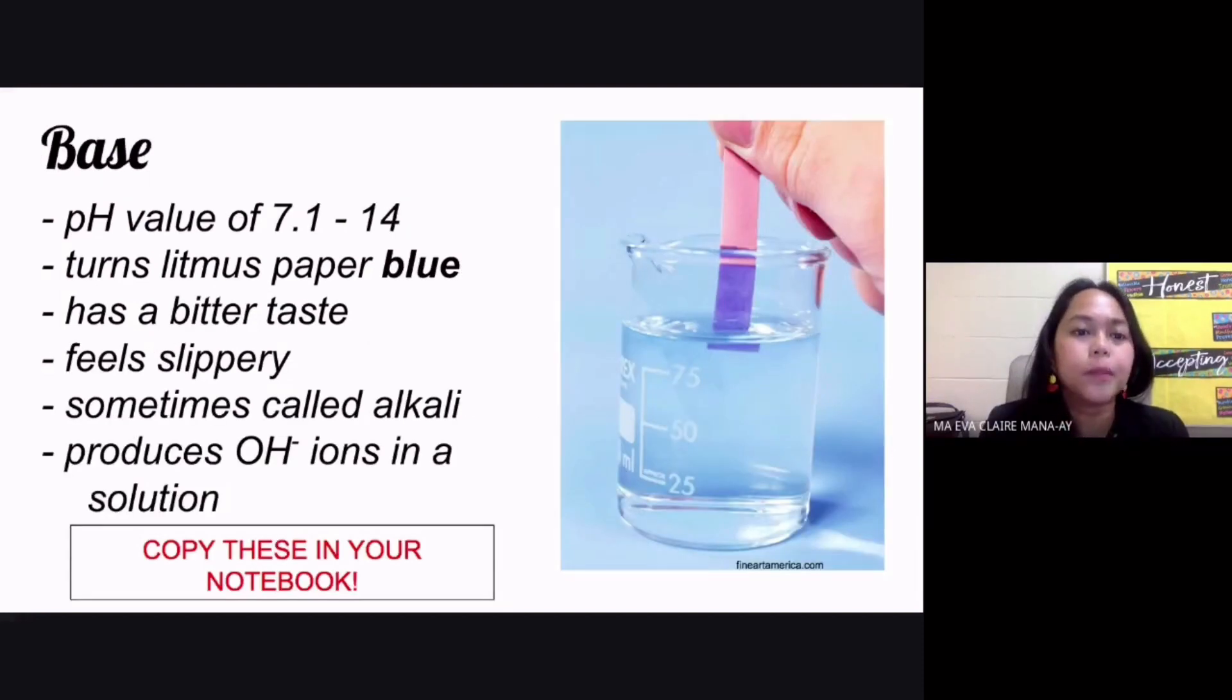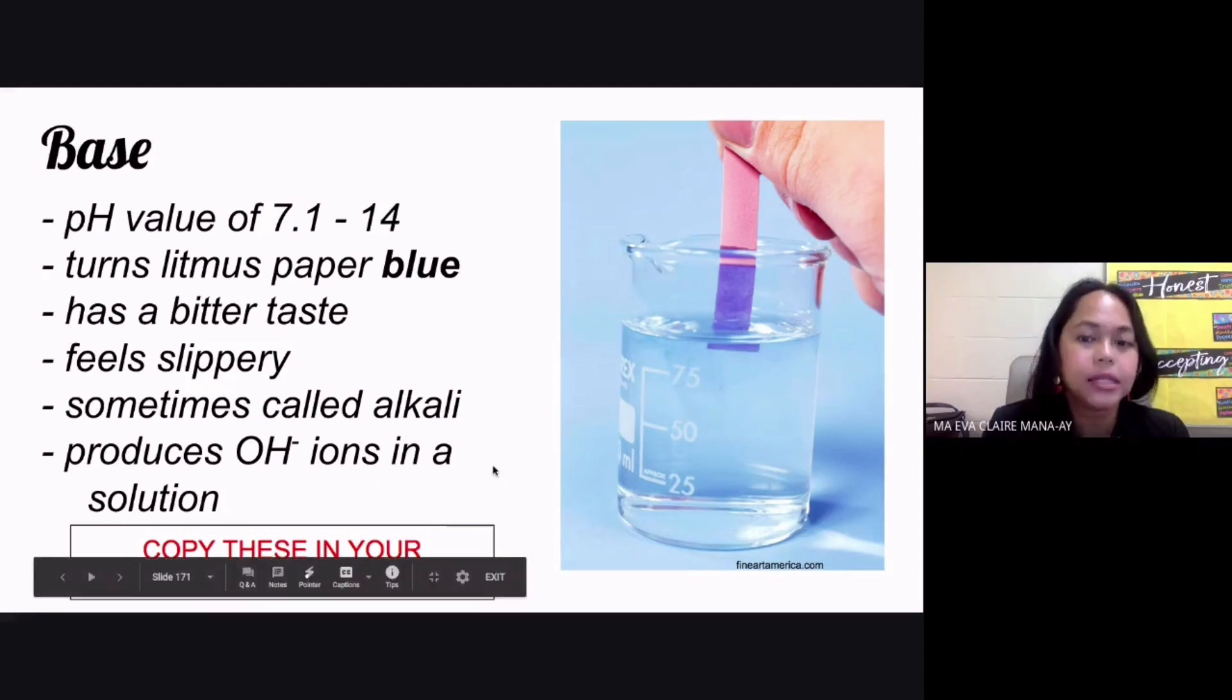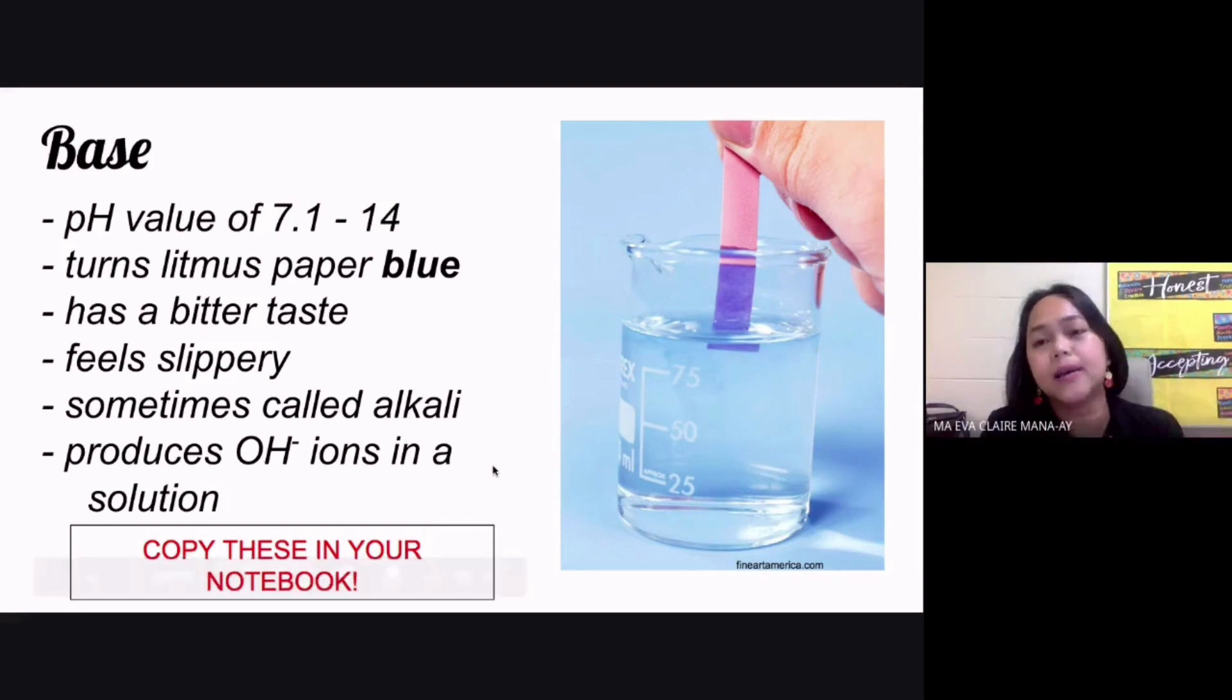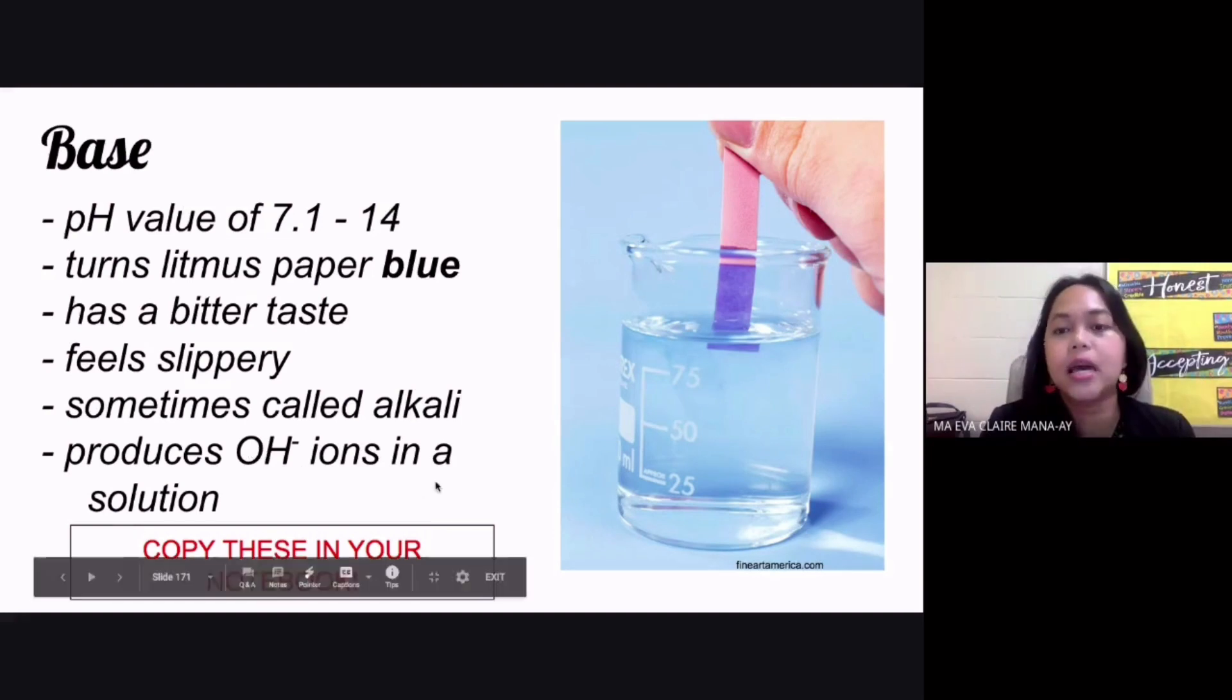Now, going to your base, the pH value is 7.1 until 14. Turns litmus paper blue. It has a bitter taste as compared to the sour taste of your acid. It feels slippery, and it's also sometimes called your alkali. Produces hydroxide ions in a solution. If it is an acid, it is going to produce your hydrogen ions when placed in a solution, while for your base, it is going to produce hydroxide ions or OH ions in a solution.